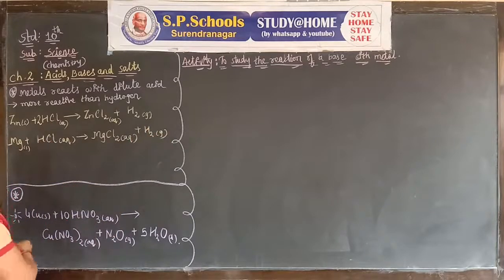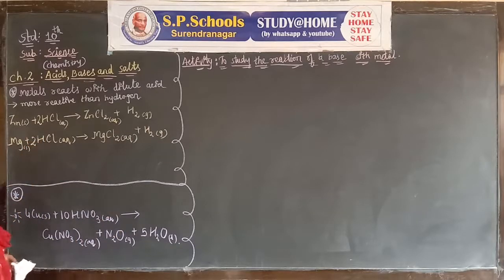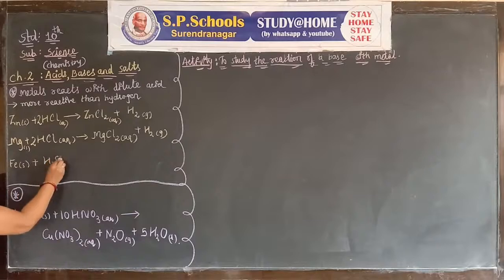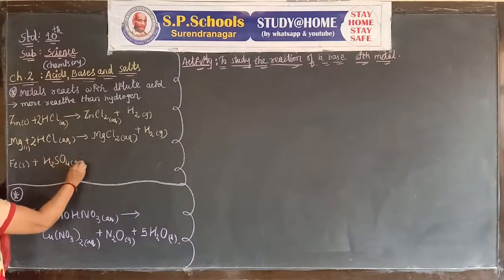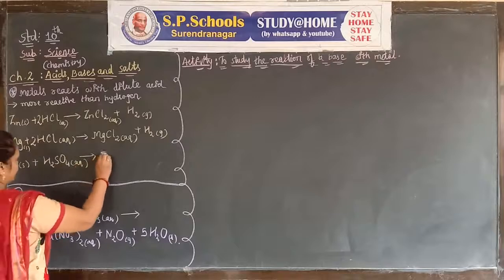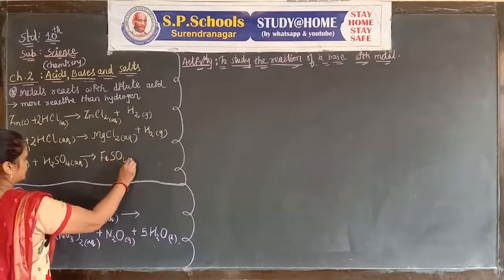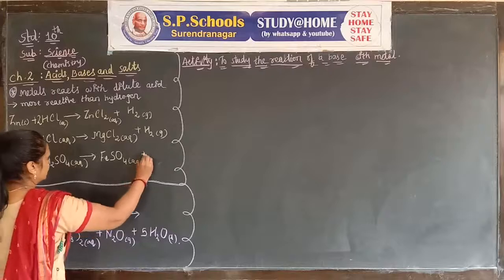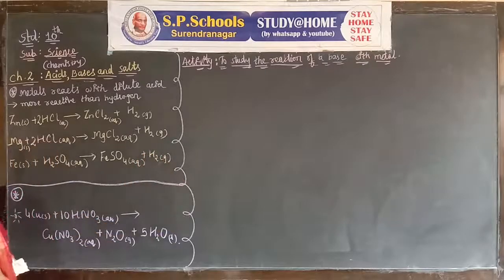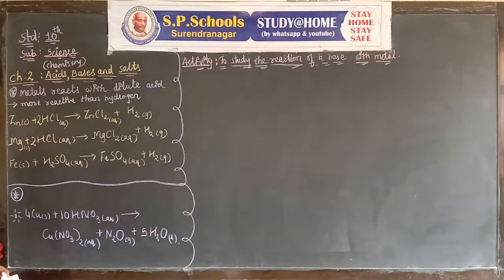Here we put 2 before HCl, same as the previous equation, to balance it. We take another example: Fe plus H₂SO₄ gives FeSO₄ plus H₂. Here the equation is already balanced, so we don't need to balance the equation.